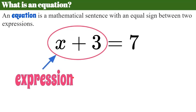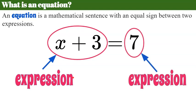We have one expression, x plus 3, and it is equal to the expression 7 — a numerical expression with just one term. We have the algebraic expression x plus 3 set equal to the expression 7, and it's a statement of equality. What we are going to focus on today is finding out what is the value of x that makes this equation true.